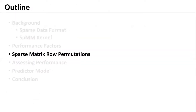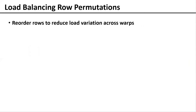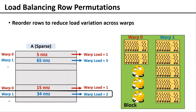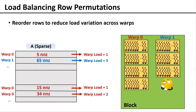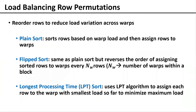Based on these factors, we propose row permutations. Load balancing permutations reorder rows to reduce load variation. In this example, if we had assigned the last row to warp 0 instead of warp 1, we could reduce the number of wasted cycles to 1 instead of 3. We propose three permutation policies in this category: plain sort that reorders simply based on warp load metric; flip sort that does the same but reverses the order of assigning sorted rows to warps every round to ensure the largest load in each round is not assigned to warp 0; and LPT sort, which uses the longest processing time algorithm and takes a greedy approach to assign each row to the warp with the smallest total warp load so far.